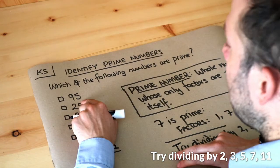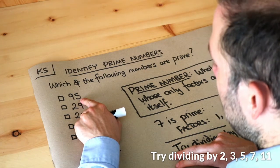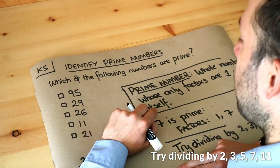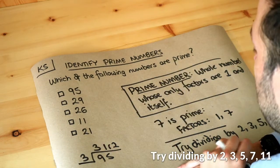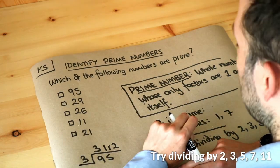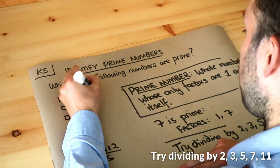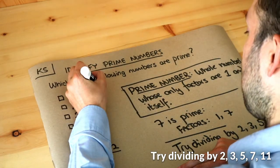What about five though? Well, if any number ends with a digit zero or five, then it's in the five times table, so it's a multiple of five, and therefore it's not a prime number. If you can find a number it divides by other than one and itself, then it's not prime. So 95 is not prime because it has a factor of five.